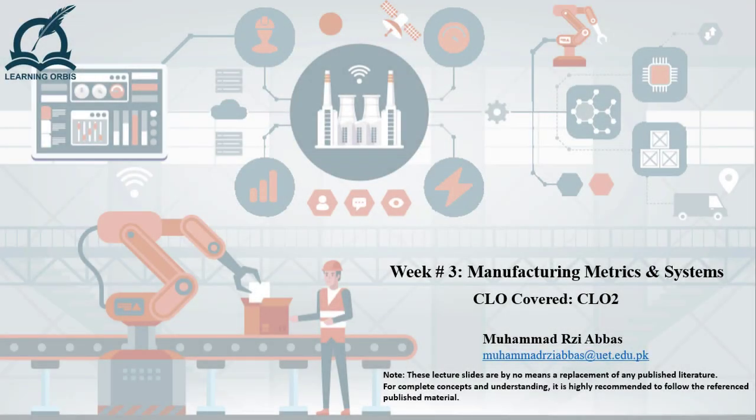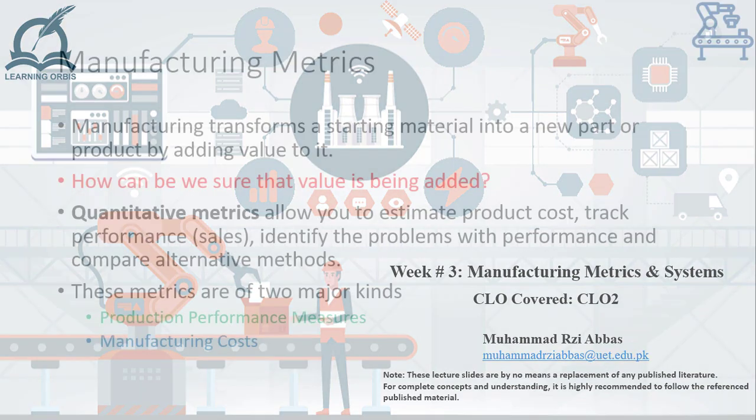Assalamu alaikum. Dear learners, I hope you are fine and doing great. In the previous lecture, we discussed what kind of manufacturing operations are being carried out in a manufacturing plant. In this lecture, I'll focus on various important metrics that are used to describe the working of a manufacturing plant. These metrics are pivotal for defining whether the production system is meeting its target or not.